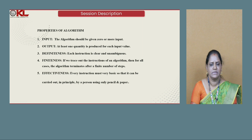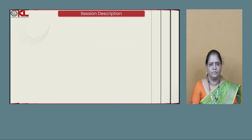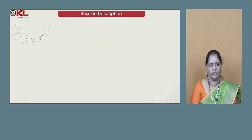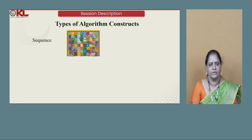Effectiveness: every instruction must be very basic so that it can be carried out in principle by a person using only pencil and paper. Types of algorithm constructs: basically, we have three types of algorithm constructs — sequence, selection, and iteration.